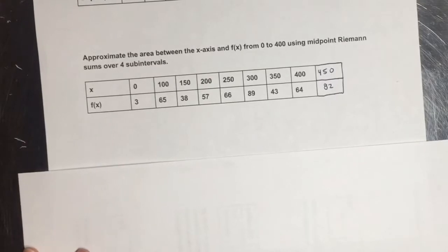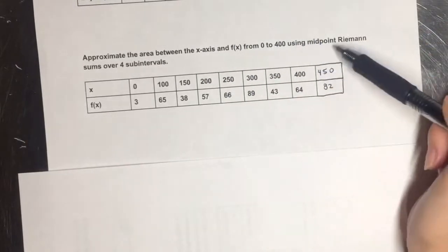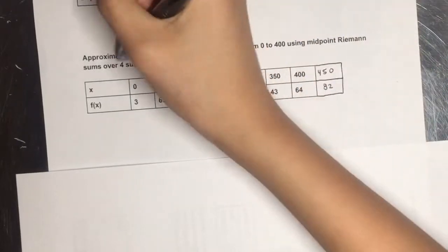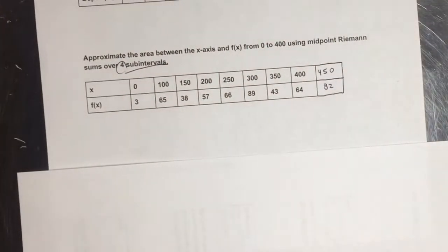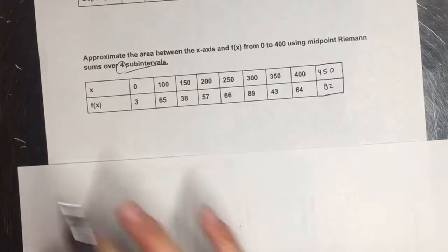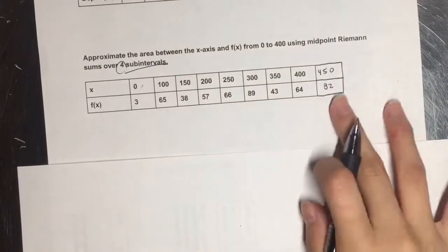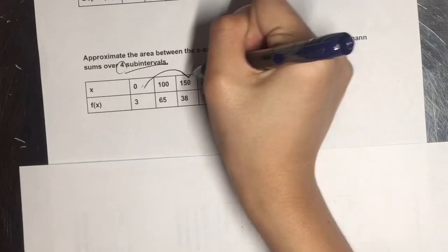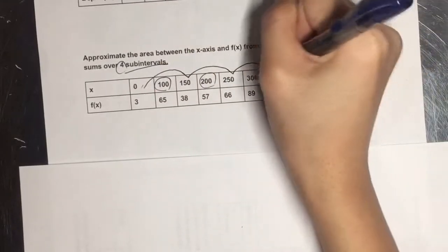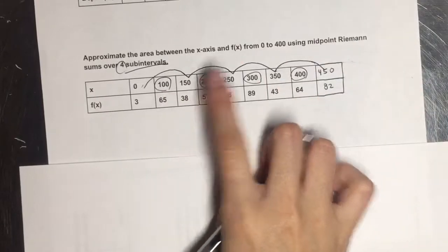Approximate the area between the x-axis and the function from 0 to 400 using MRAM over 4 subintervals. So I messed up on this problem. I actually meant to put 450, but it doesn't matter. We're just going to put from 0 to 450. So as you can see, we've got 4 subintervals. And those midpoints are 100, 200, 300, and 400.